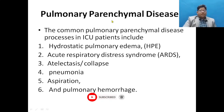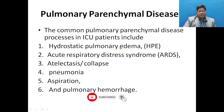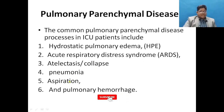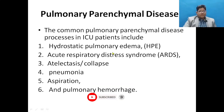The most common pulmonary parenchymal disease processes in the ICU patient include pulmonary edema — that is hydrostatic pulmonary edema — ARDS (acute respiratory distress syndrome), atelectasis or collapse, pneumonias, aspiration, and pulmonary hemorrhages. These are the most commonly encountered pulmonary parenchymal diseases in ICU and HDU patients.